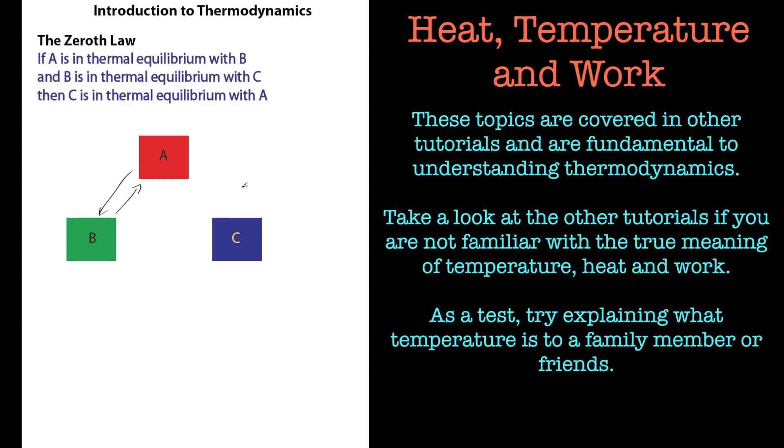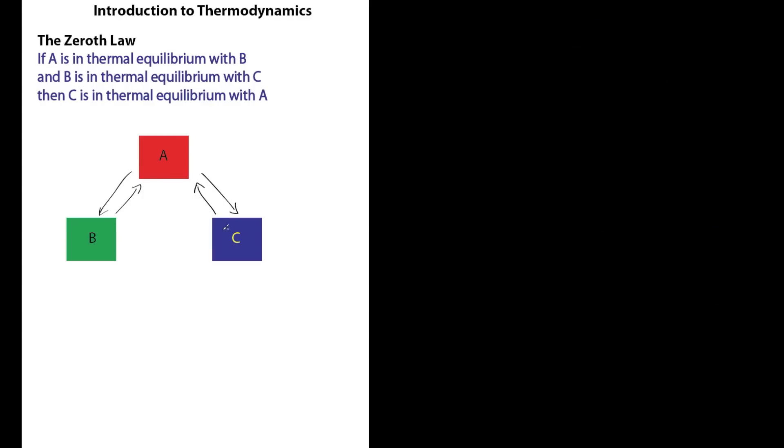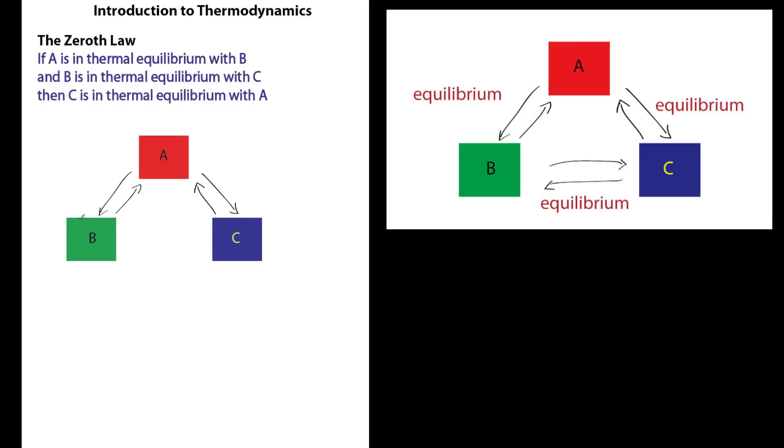Now if A is also in thermal equilibrium with C, that means by default, because A is in thermal equilibrium with B and it's in thermal equilibrium with C, that means B must be in thermal equilibrium with C.